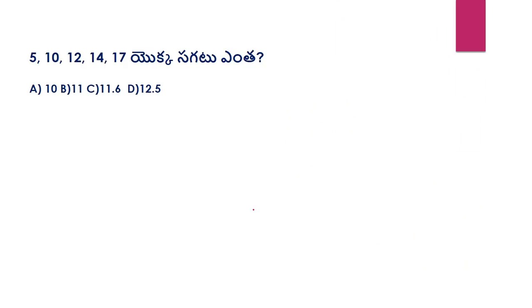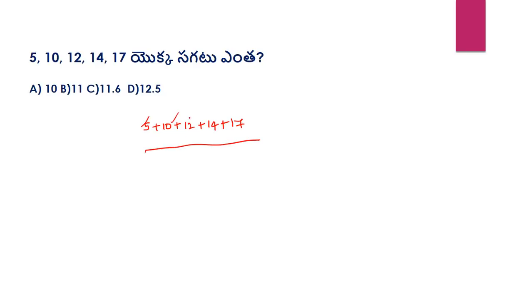The first question is a basic question. We will start with 5, 10, 12, 14, 17. The formula is 5 plus 10 plus 12 plus 14 plus 17 divided by 5.